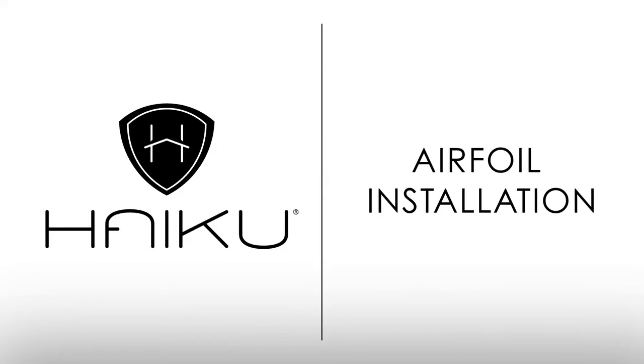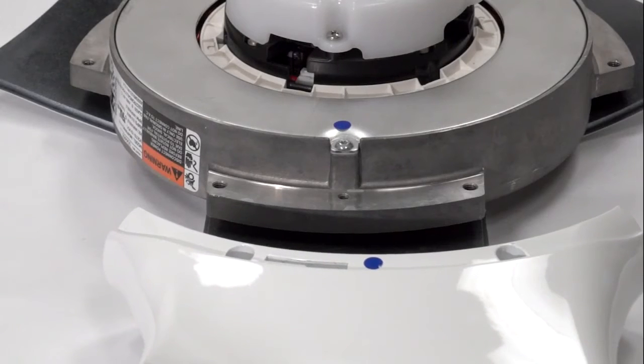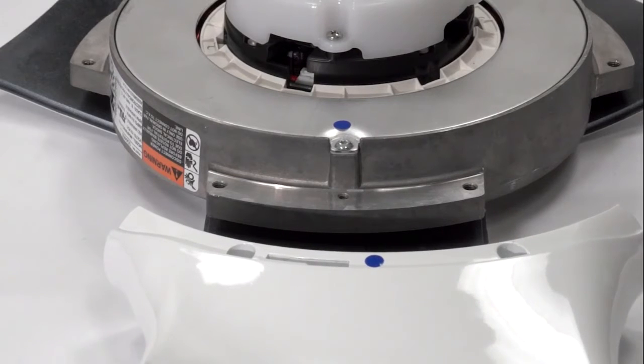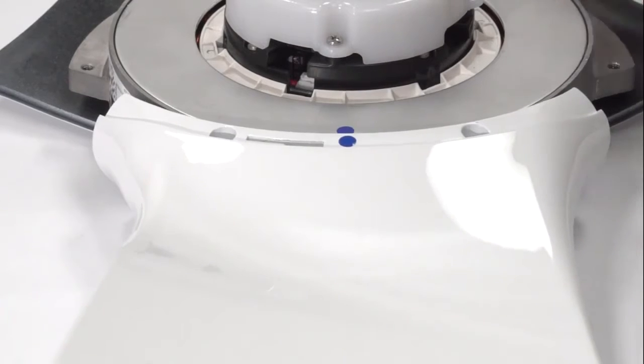Now you'll install the airfoils on your fan's hub. Start by matching the stickers on the airfoils to those on the fan hub. Haiku fans are specially balanced, so it's important that the stickers match.